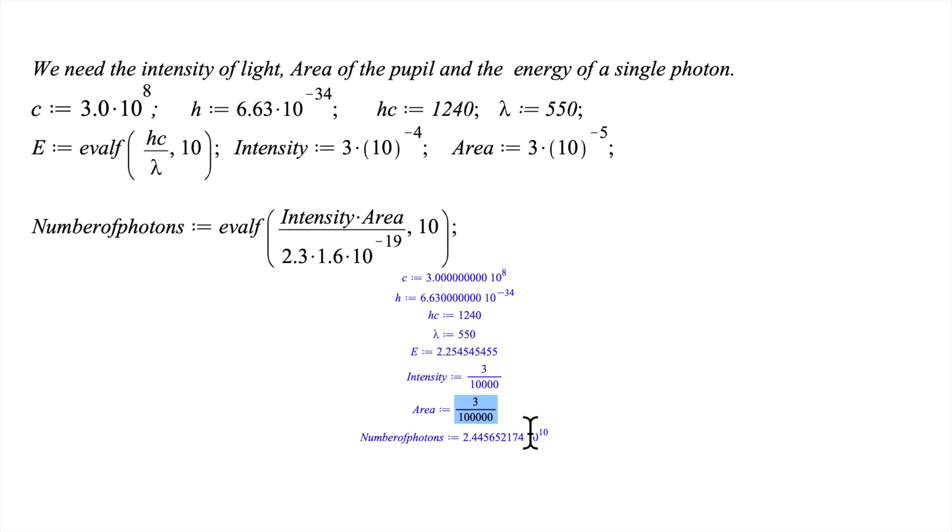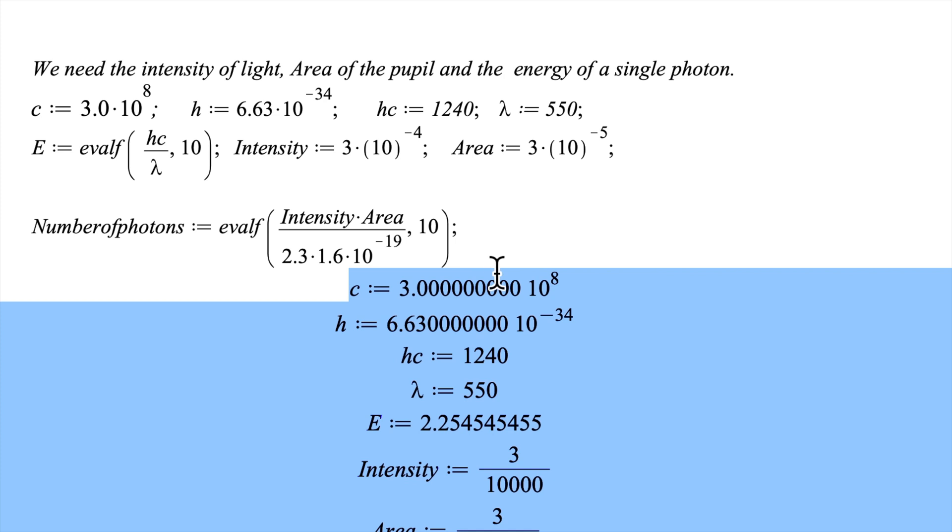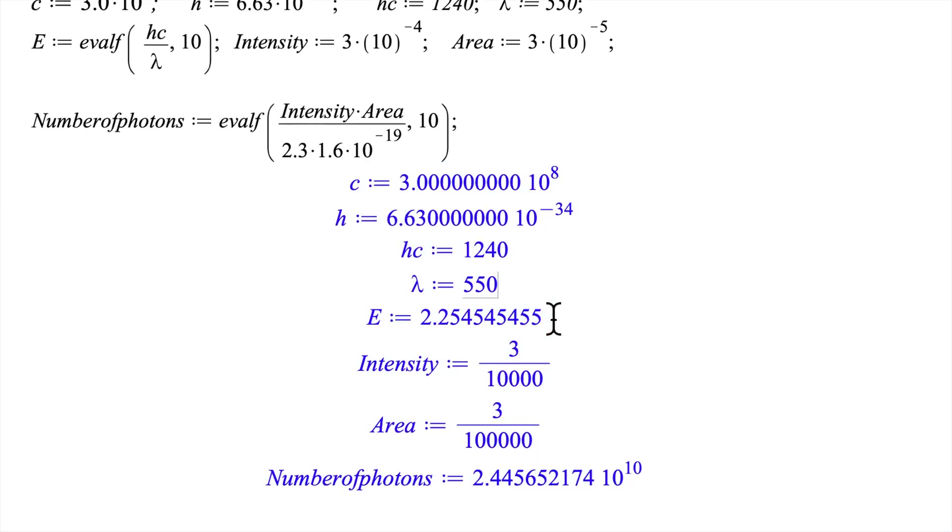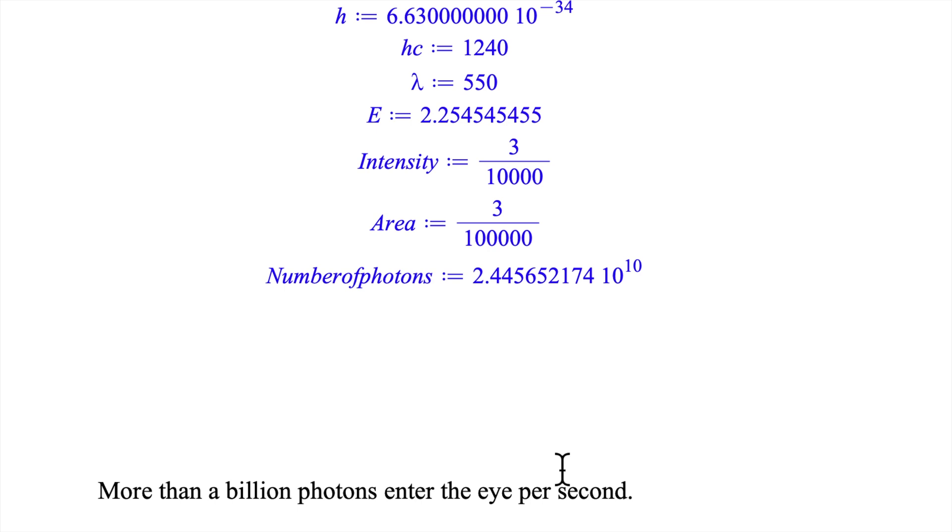The number of photons that enter the human eye per second when we look at the moon is roughly this number right here. That is more than a billion photons per second. It's a huge number.